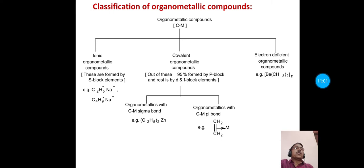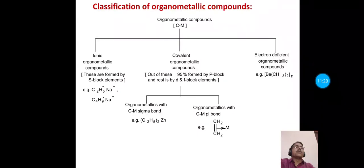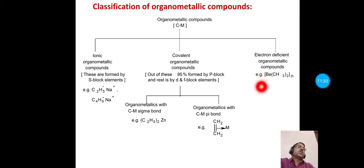Covalent organometallic compounds are non-polar and dissolve in non-polar solvents like benzene, ether, or carbon tetrachloride. Electron-deficient organometallic compounds are volatile in nature.